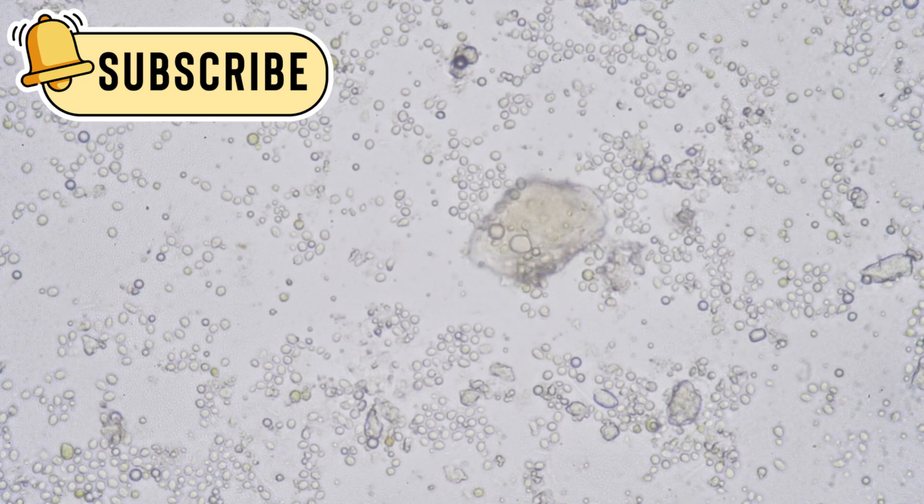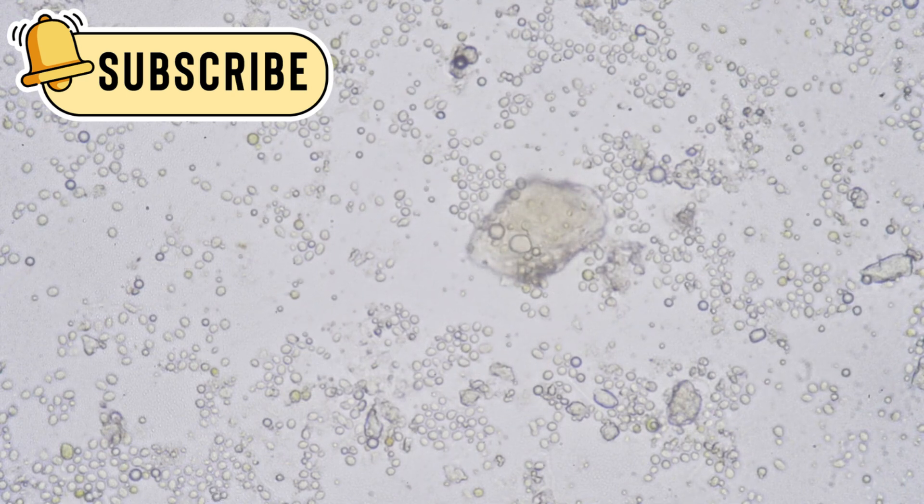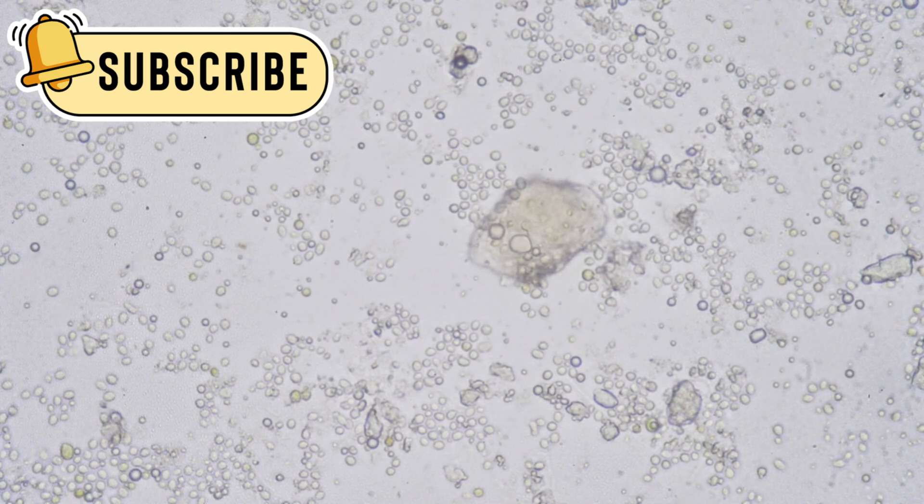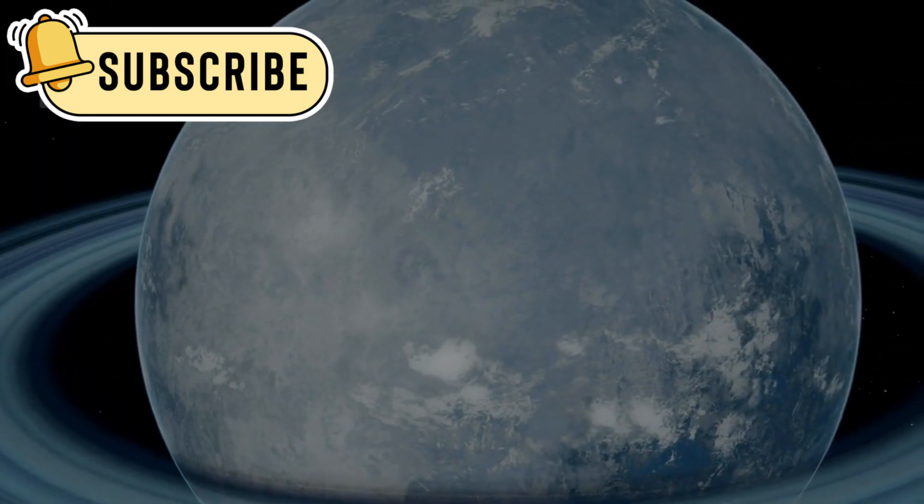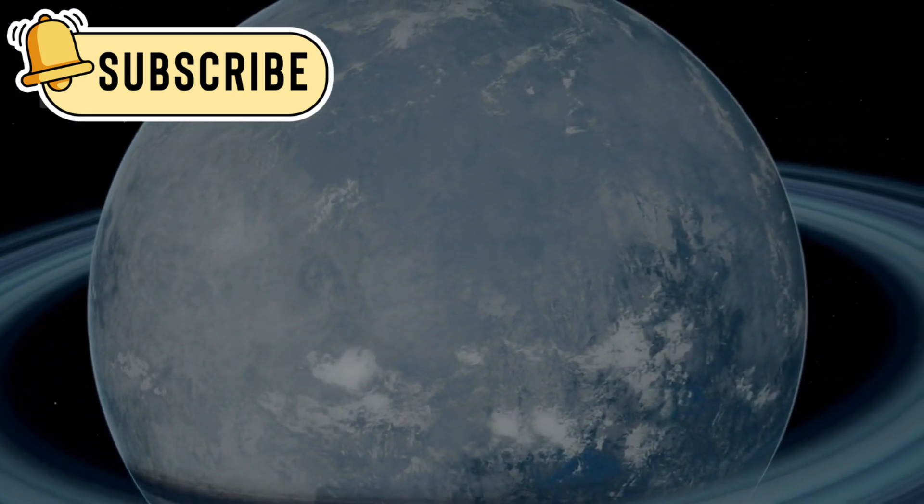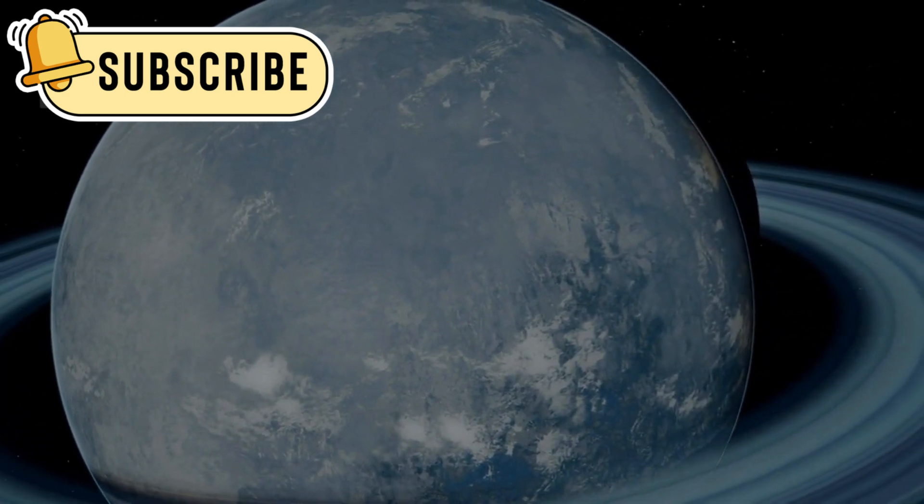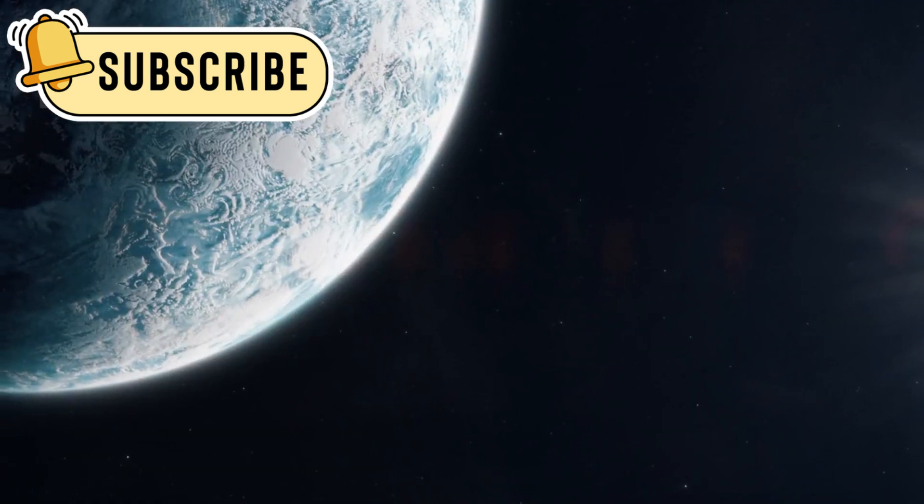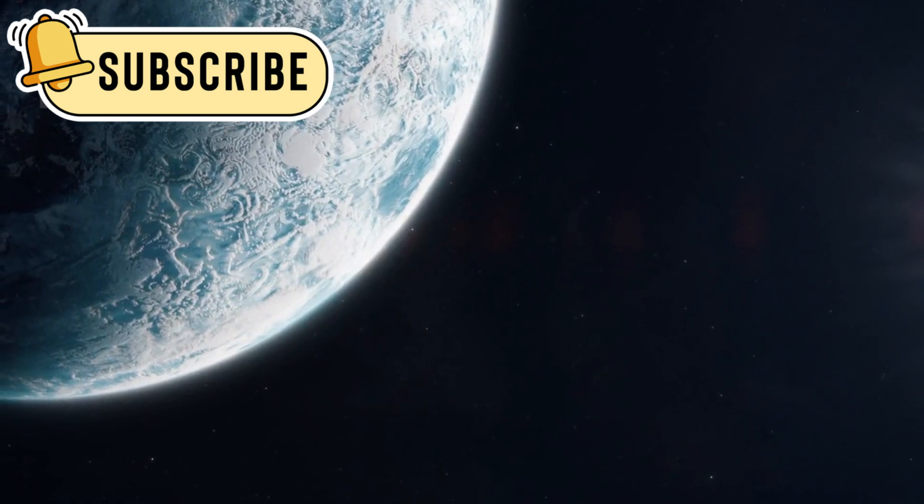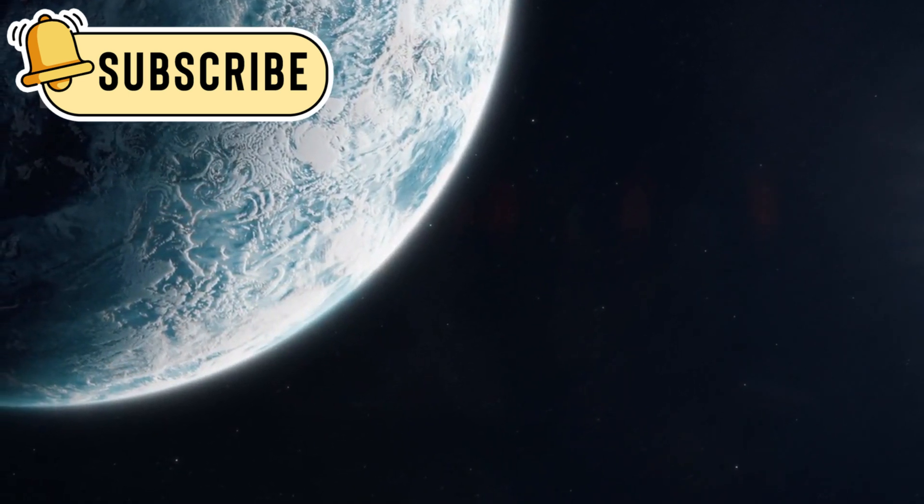These planets might have oceans that make up 90 percent of their mass, offering huge potential for microbial life to exist deep within. Hyacian worlds could also have wider habitable zones, meaning they don't need to be at just the right distance from their stars to support water. Their thick atmospheres trap heat, keeping water in liquid form even in places where it would otherwise freeze or evaporate.